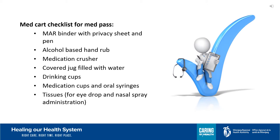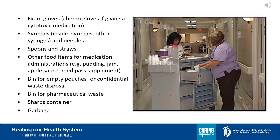Here's a checklist of things you're going to need: your MAR binder with privacy sheet and pen, alcohol-based hand rub, your medication crusher, covered jug filled with water, drinking cups, medication cups and oral syringes, tissues for eye drops and nasal spray administration, and exam gloves or chemo gloves if you're going to be giving any cytotoxic medications.